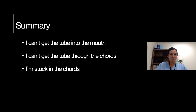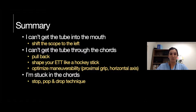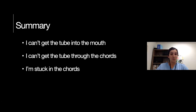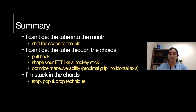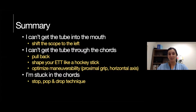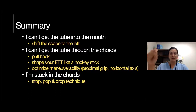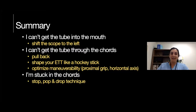To summarize: if you can't get the tube into the mouth, shift the scope to the left to make space. If you can't get the tube through the cords, pull back your scope to create more space, use either the rigid GlideScope stylet or shape your ET tube like a hockey stick, and most importantly optimize your maneuverability — get a proximal grip, enter on a horizontal axis, and twist when you're right above the cords. And finally, if you're stuck at the cords, remember the stop, pop, and drop technique for a successful, easy intubation.